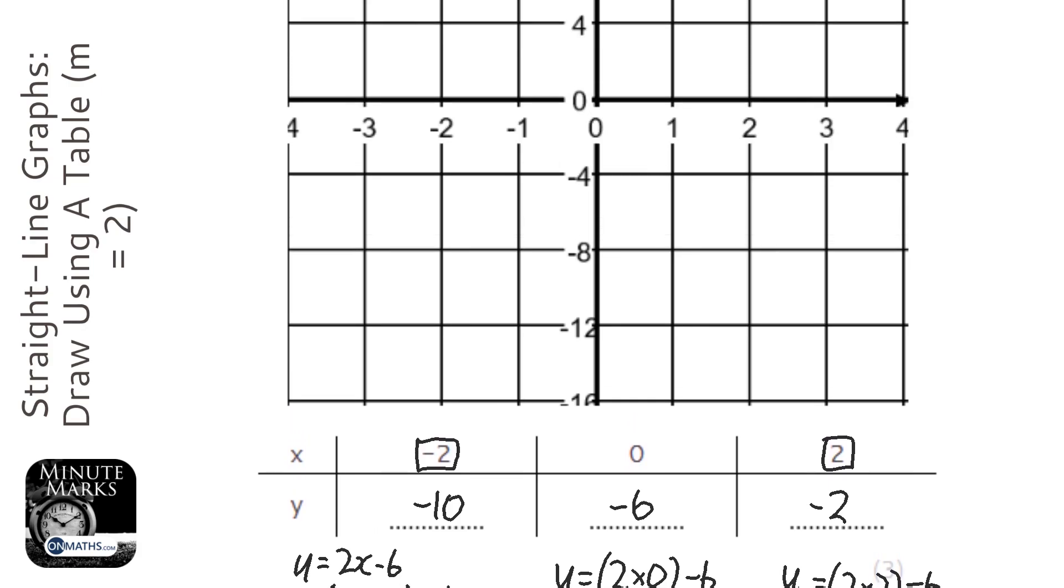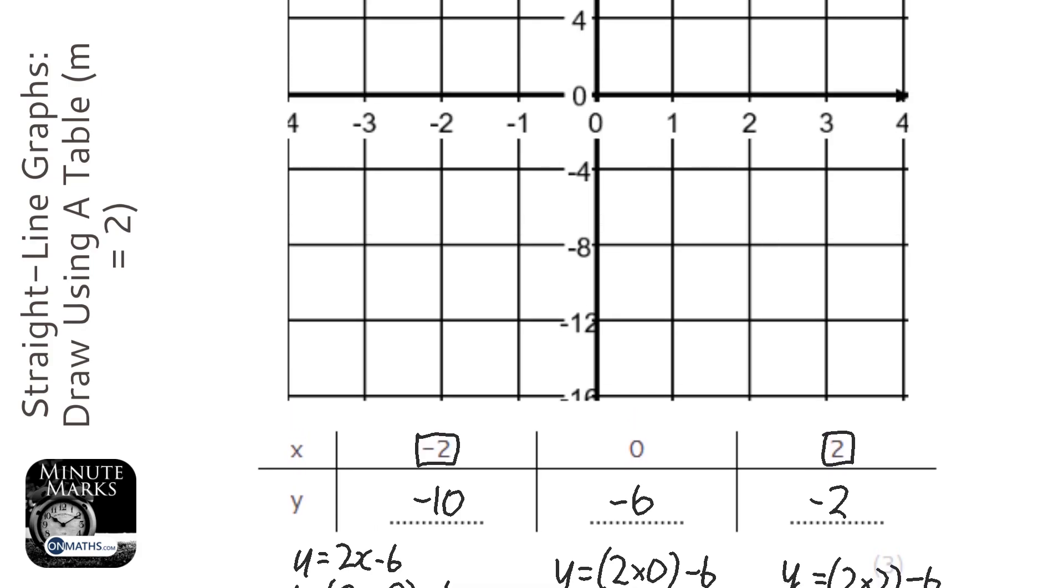Now we've got to plot these. When x is -2, y is -10—that's halfway between -8 and -12. When x is 0, y is -6, which is halfway between -4 and -8. And when x is 2, y is -2, which would be here.